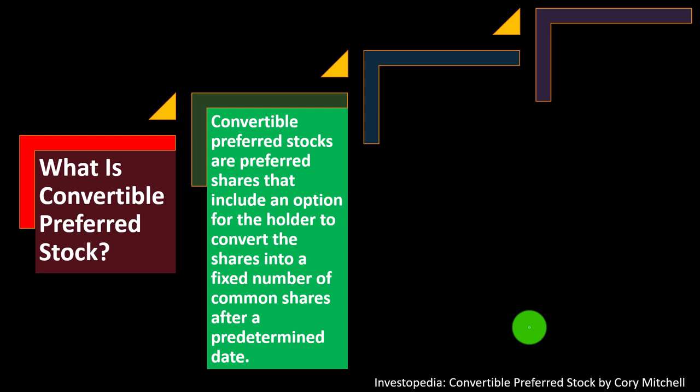On the other hand, common stock usually has more upward potential and includes voting rights — for example, voting for the board of directors. If the value of the company goes up, that's typically more reflected in the price of the common stock than in the preferred stock. The preferred stock acts more like a bond in that nature.